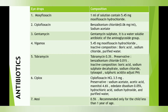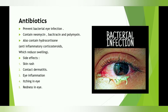Moving forward to the antibiotics. Antibiotics are used to prevent bacterial eye infection. They contain neomycin, bacitracin, and polymyxin, and also contain hydrocortisone. These are some compositions of all the antibacterial drugs. Hydrocortisone is used as an anti-inflammatory corticosteroid that reduces the swelling in the eye. If a patient comes to you with swelling in the eye, you should see if there is any infection present or not, and which type of infection it is.